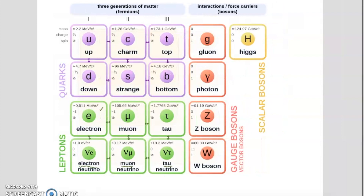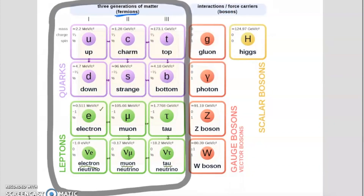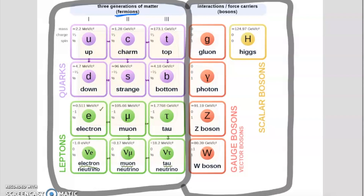The quarks and the leptons are all called fermions. Over on the right is where you get your force carriers, or bosons. I want you to know that these exist — things like a gluon, a photon, a Z boson, a W boson, and the Higgs boson. But we're going to set the bosons aside and focus on the fermions — our quarks and leptons — today.